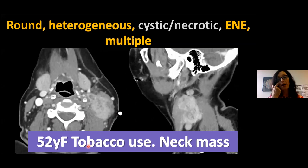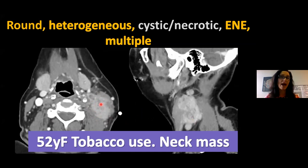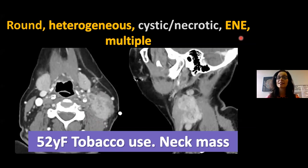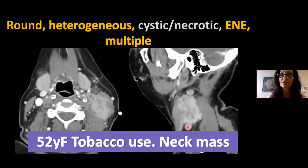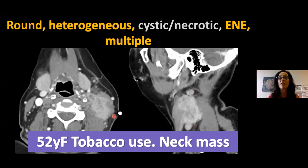Another case: a heavy tobacco user presenting with a left neck mass — a very heterogeneous, enhancing mass. Do I need to measure it? Clearly it's big, clearly it's bad. It's also infiltrating the sternocleidomastoid muscle and paraspinous muscles — no question this has extranodal extension. It's very rounded and heterogeneous. Once I've found that, I look above and below it: there are additional rounded, heterogeneous lymph nodes, which were also metastatic. Once you've found one abnormal node, you must look for more because it's important for staging.